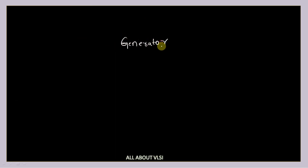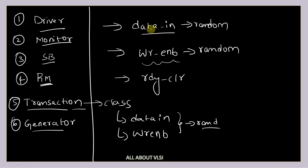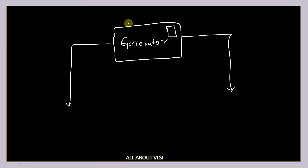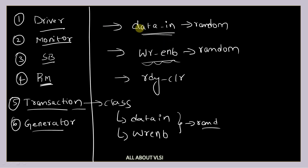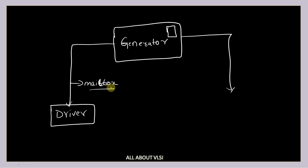The very first component we are going to have is the generator. This generator is a class which is going to have an instance of the transaction class. Using the concept of mailbox, we are going to send the entire transaction object — not property by property — to our driver via the mailbox.